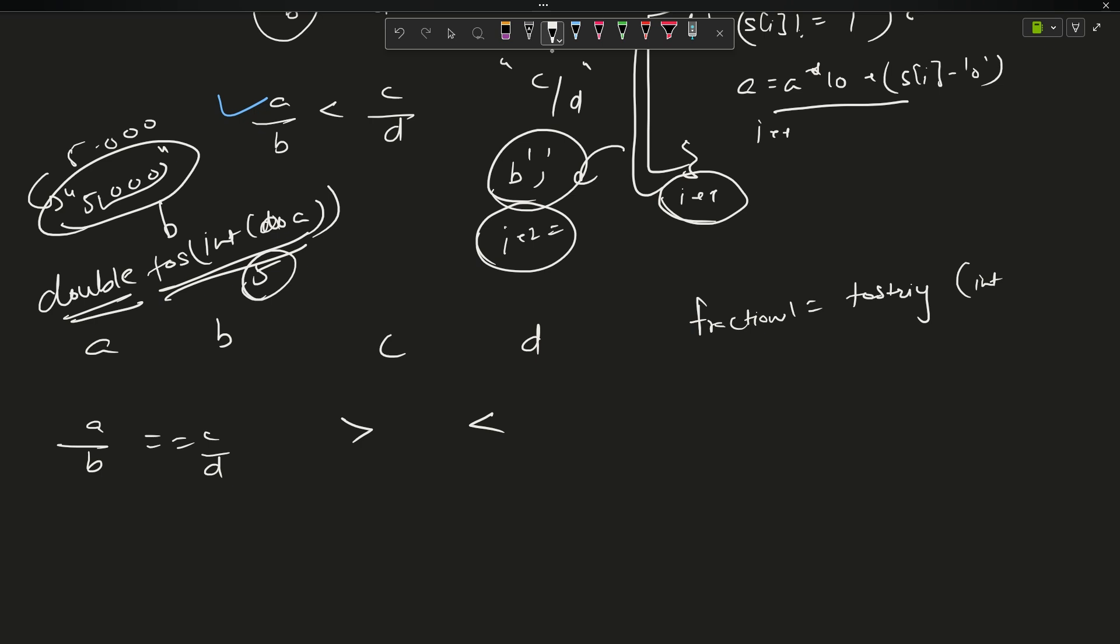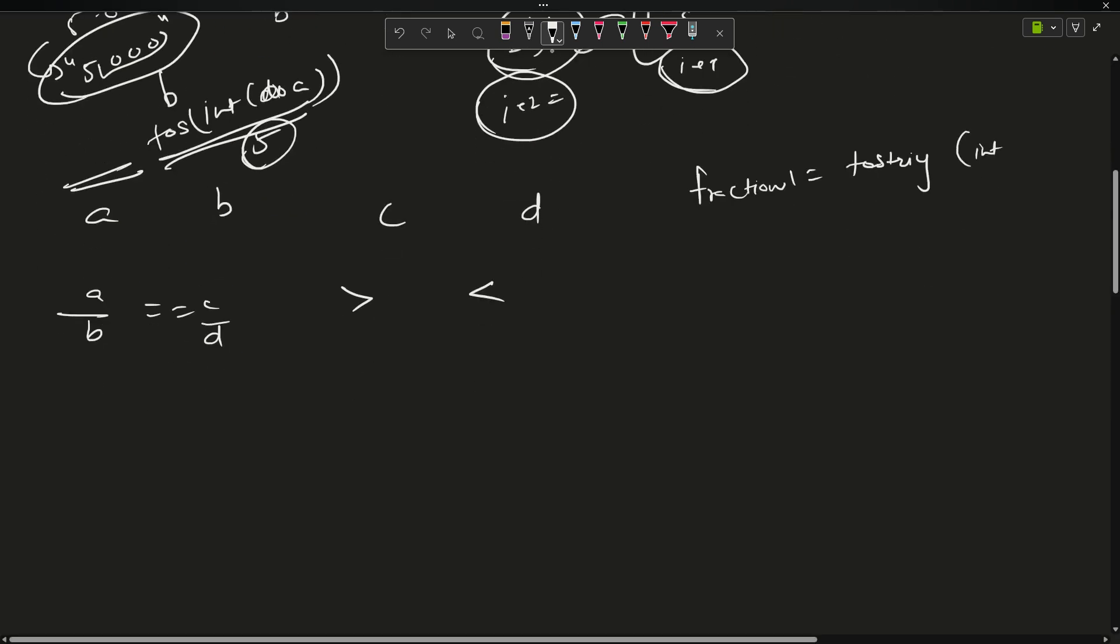What you can do: you can say int of a and I will convert this into a string, that will give me only 5. What else you can do: you can just not take it in double, you can take it in int. Suppose you have int a, int b, int c, int d. Now the fractions a by b equals c by d can actually be reduced to a into d equals b into c.